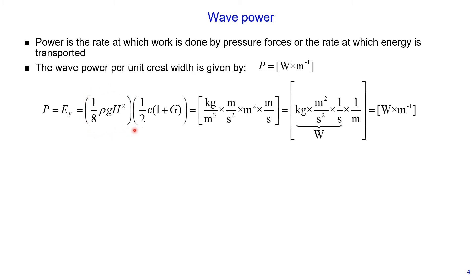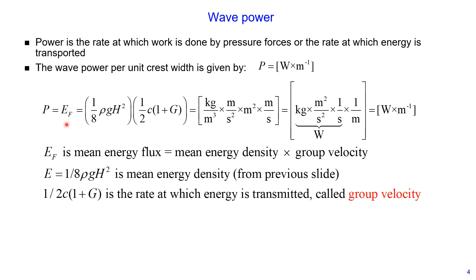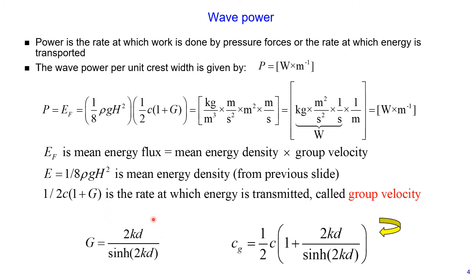Substituting units for each parameter, the wave power per unit crest width has units of watts multiplied by meter to the power of minus one. The mean energy flux EF is defined as the product of mean energy density E multiplied by group velocity. The group velocity expression includes parameter G, defined as 2 multiplied by wave number multiplied by water depth, divided by hyperbolic sine of 2kd. Group velocity is therefore 1/2 multiplied by wave speed, multiplied by the quantity (1 + G).